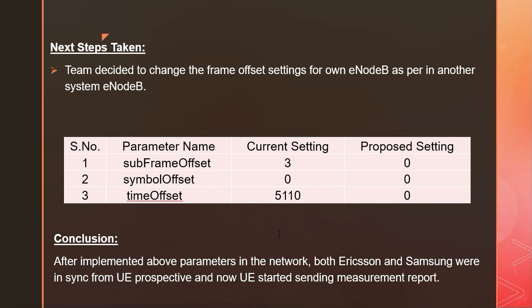After implementing these parameters, the KPIs were improved — both Ericsson and Samsung networks were in sync and the UE started sending measurement reports. You can also implement this if you are facing similar issues where your KPIs are failing in preparation phase with 100% failure. Check those sites, their configurations, check TAC and these frame offset parameters, then verify post-implementation KPIs in your network.